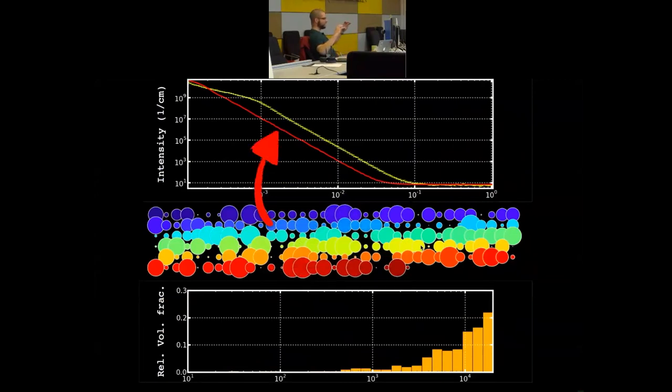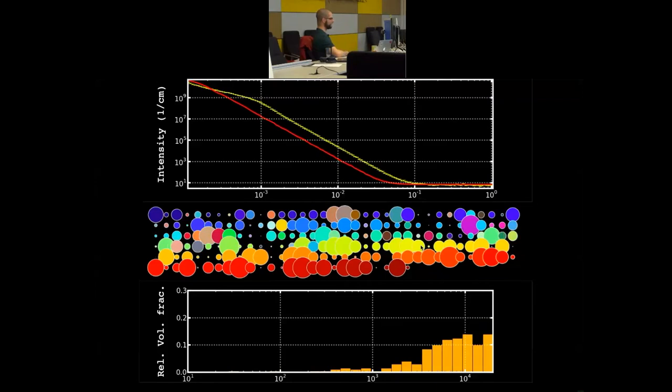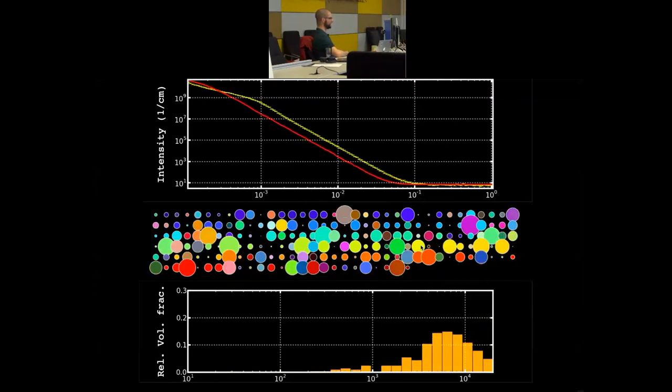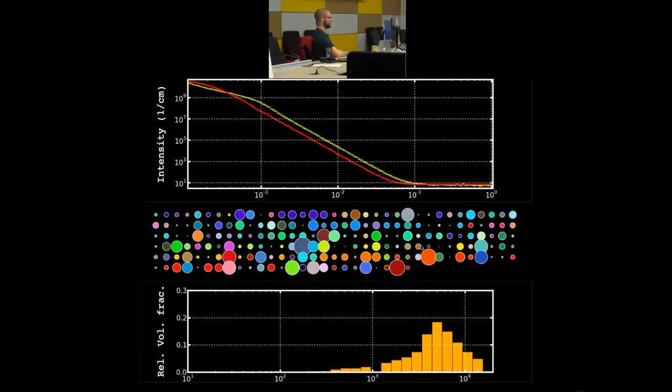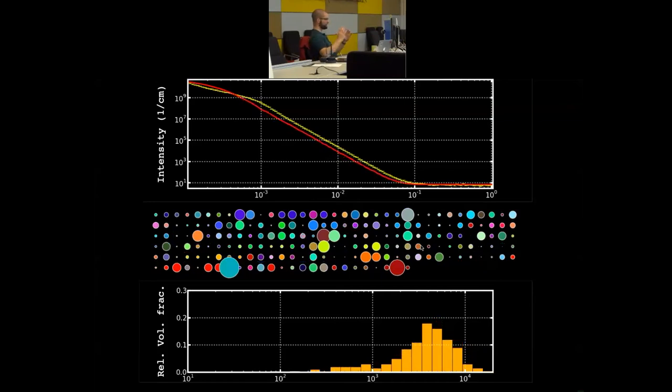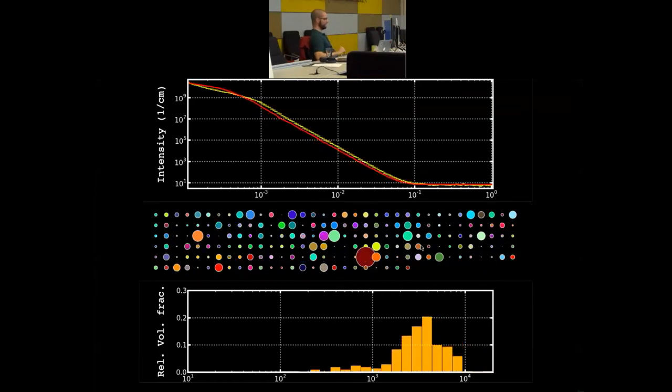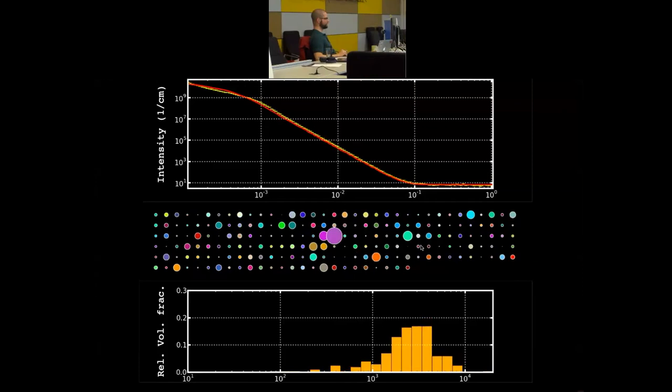So, that set of spheres then describes our model intensity, and we can histogram that set of spheres to get an idea about the size distribution out. And then when we let the optimization run, you can see that this gradually changes the radii of the spheres, and our distribution basically walks over to the right distribution, or to a solution for that distribution.